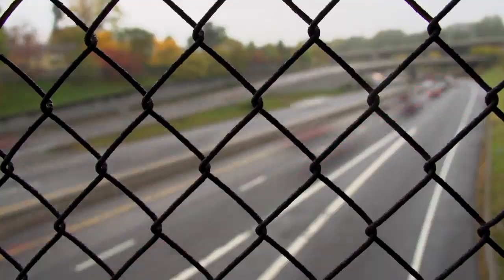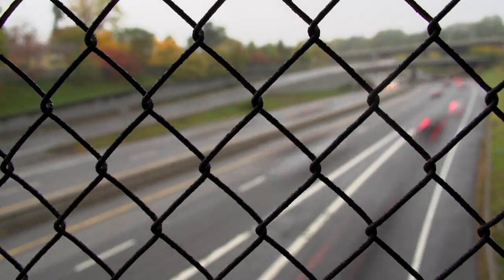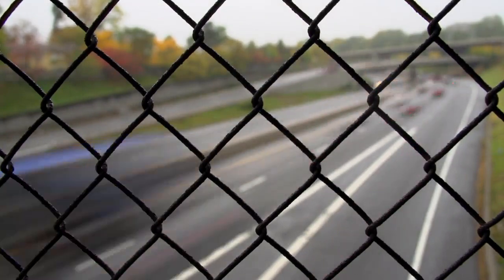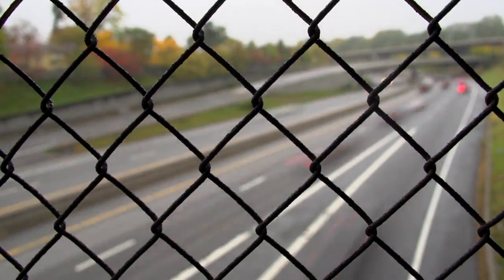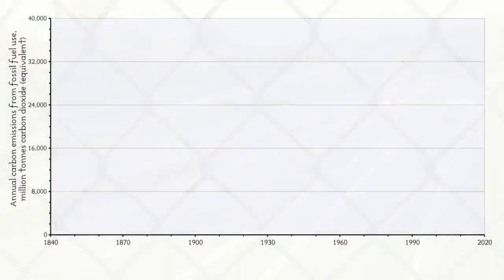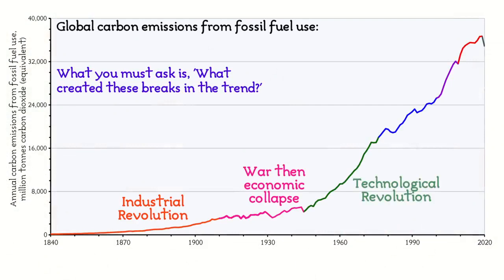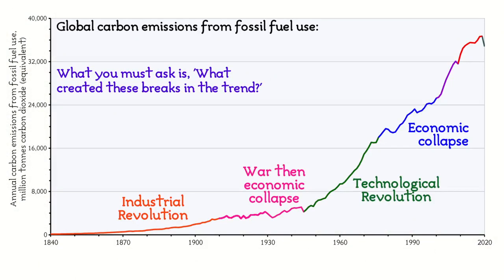Of course, for those who study energy and economics, the dates where the trend changes leaves little doubt as to the likely cause. This graph labels the different sections of the observable cause of these changes. Very simply, when the global economy fails, carbon emissions fall, and when the global economy is boosted, carbon emissions rise.